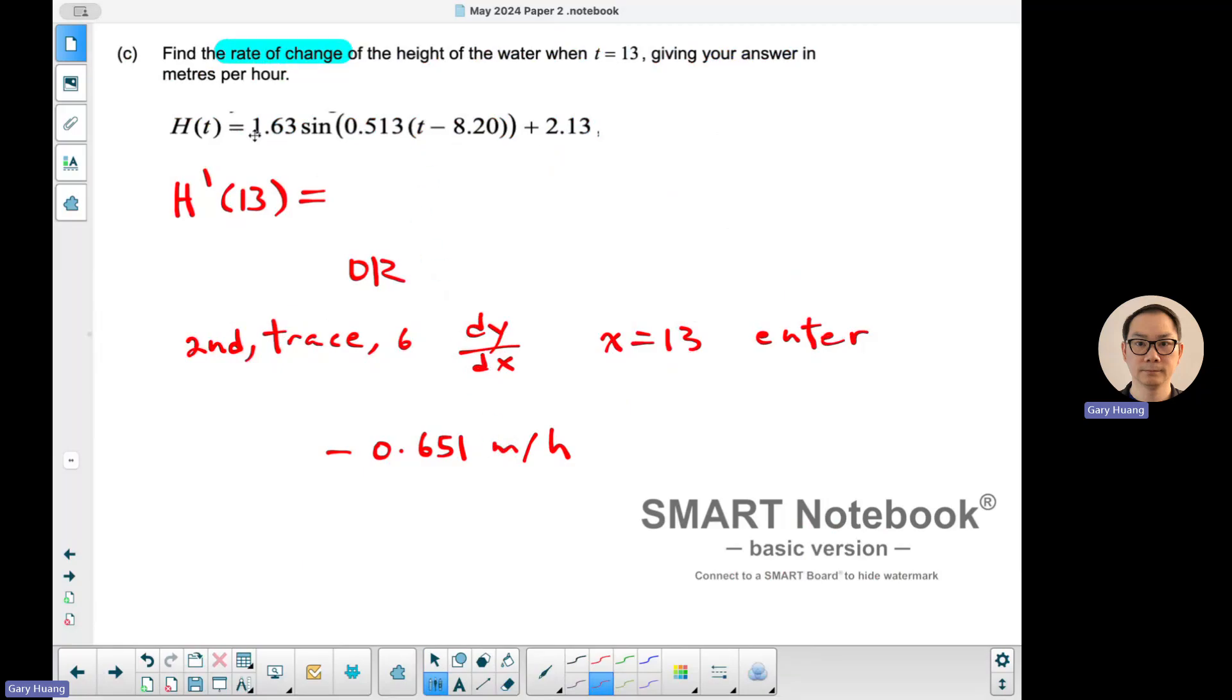If you don't want to use the calculator, you can do the derivative manually. Derivative of sine is cosine. Just make sure there's a chain rule with 0.513. Make sure you multiply by the chain. But it's more work. On a paper 2, might as well just use the graphing calculator.